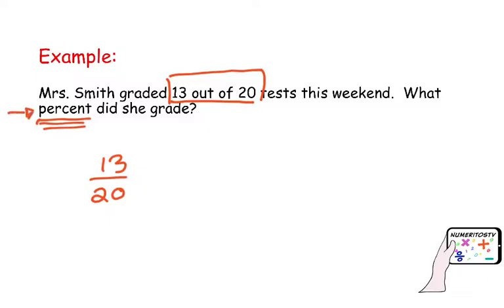So, again, percent means per hundred. So, I need to find an equivalent fraction with denominator 100. So, 20 is a number that easily can be changed to 100 if I multiply it times 5. Again, if you want to practice equivalent fractions, go and check the description of this video. I will give you that link there. So, whatever you do to the bottom, don't forget to do it to the top. You need to multiply 13 times 5.